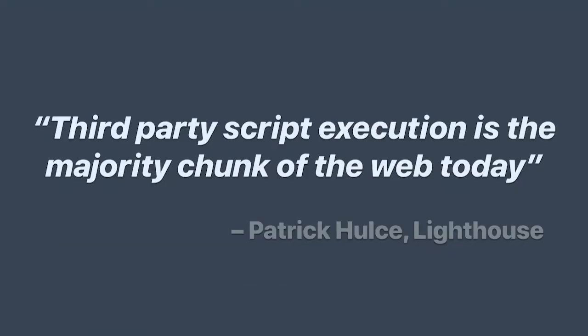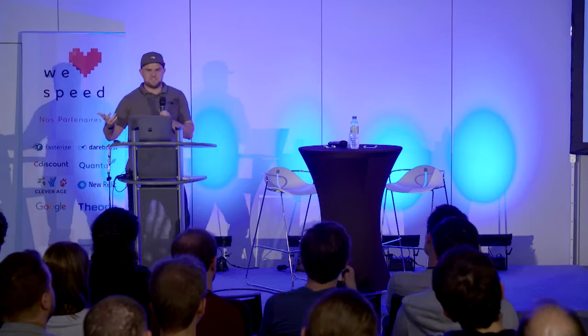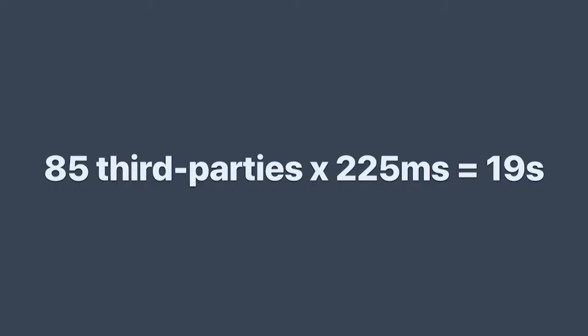It's so bad that Patrick Hulse of the Lighthouse project showed that in his study, third-party script execution is the majority of web activity today — most of the time your browser is downloading and executing third-party JavaScript. The average per third party is 225 milliseconds. That doesn't sound too bad on its own, but when you have 85 of them, that's 19 seconds where someone can't interact with a device. We also have an inaccurate development experience — production will have all these tag managers, analytics, and A-B tests running, whereas your dev machine probably doesn't have half of that.